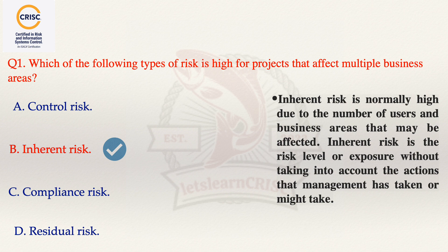Moving to option A, that is control risk. This option is incorrect because control risk could be high, but it would be due to internal controls not being identified, evaluated, or tested, and would not be due to the number of users or business areas affected.